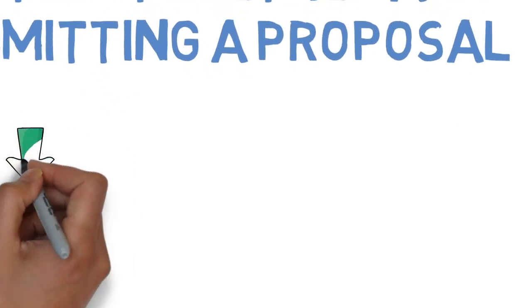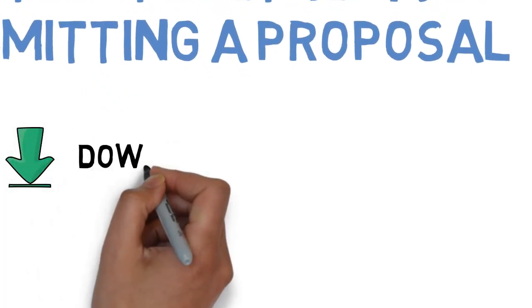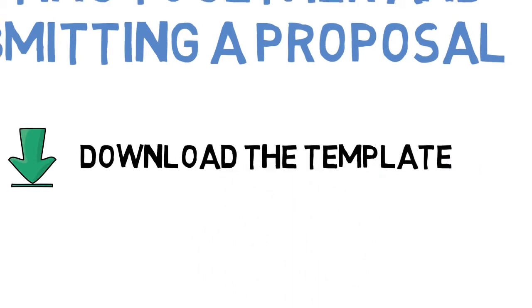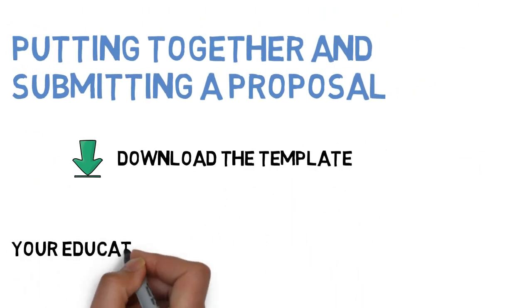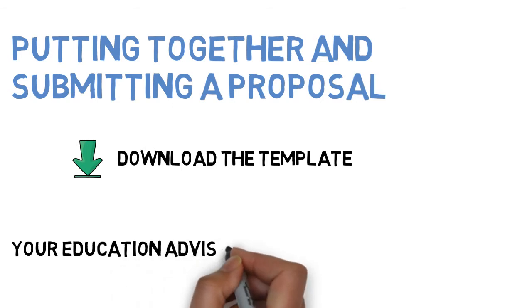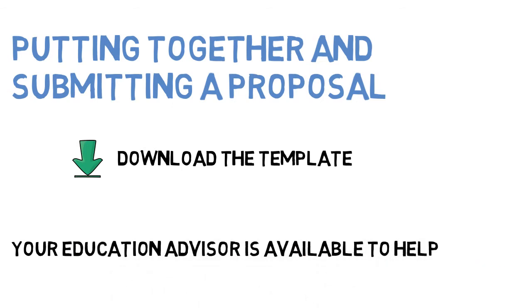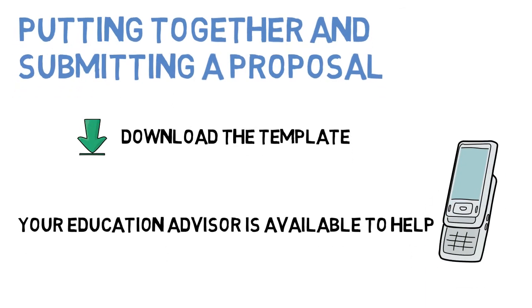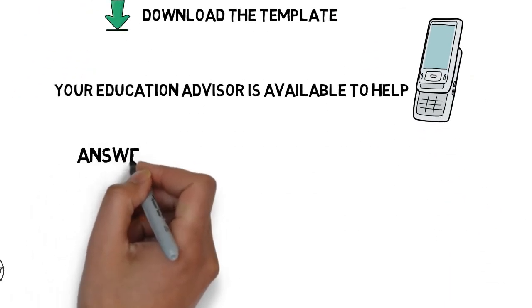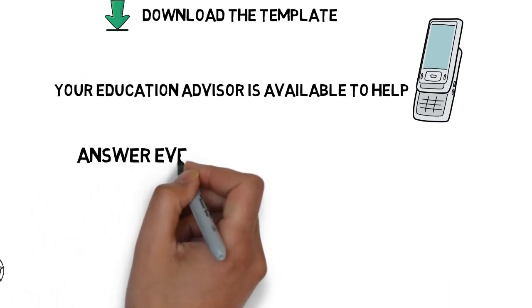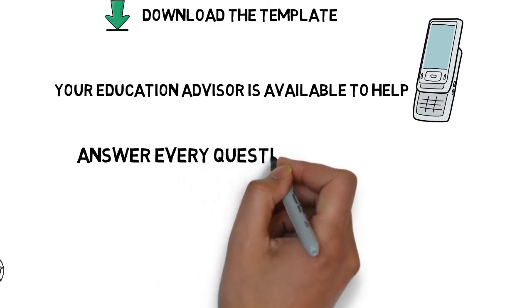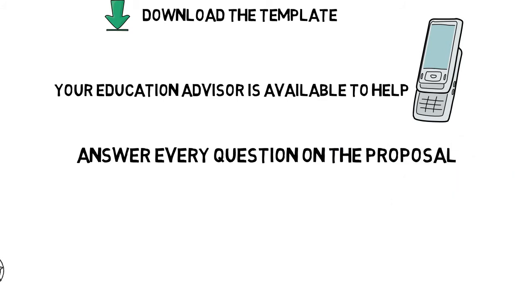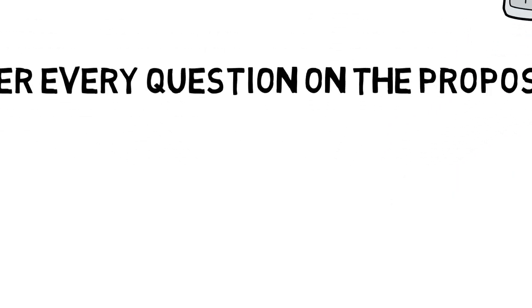Secondly, putting together and submitting a proposal. Download the PLD journal proposal template from the PLD website and start answering the questions within it. Your Regional Ministry of Education advisor is available to assist you. Answer every question, making sure that overall your proposal tells the reader exactly what you want — and this may be in more than one area — and why.